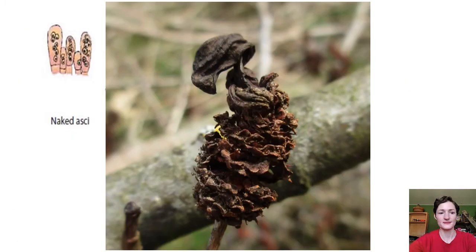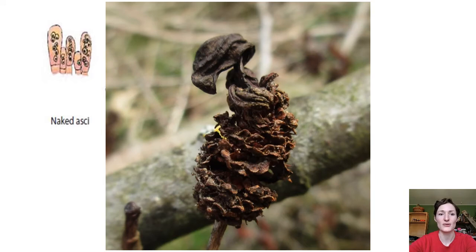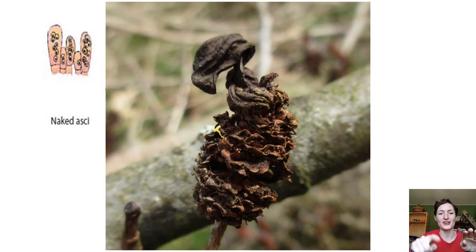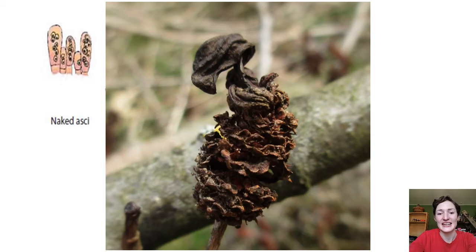Looking at ways ascomycetes make their fruiting bodies: the earliest ascomycetes don't contain their asci in any structure — they make naked asci on the surface. A local example occurs on red alders and white alders. If you look at alder cones, a fungus called Taphrina infects them and produces these powdery white-looking asci on extended brackets of the cones. We'll be on the lookout for those — it's a fungal infection.